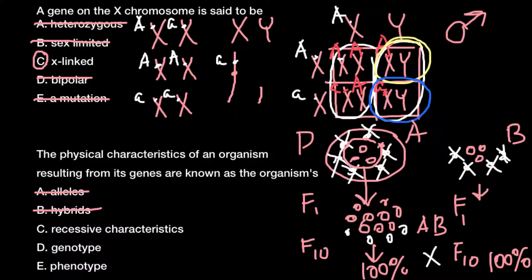Answer C: recessive characteristics. The physical characteristics of an organism resulting from its genes can be recessive, but they can also be dominant, homozygous dominant, or heterozygous. Sometimes the heterozygous condition and homozygous dominant do not affect how the trait appears. So recessive characteristics does not answer this question, and we can cross out it.